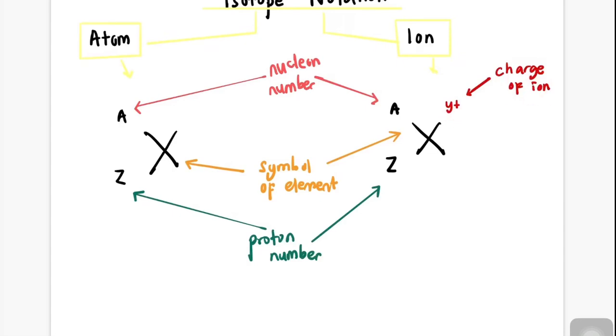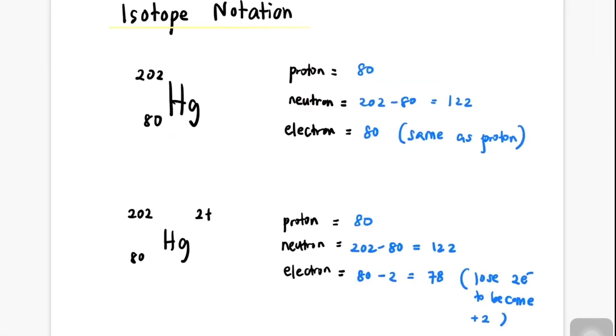For example, isotope notation for mercury Hg-202 with atomic number 80 means Hg has 80 protons, 122 neutrons (because 202 minus 80 equals 122), and 80 electrons, same as protons, because they are neutral with no charge.